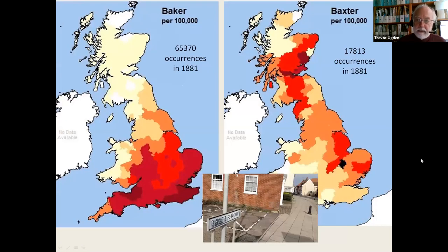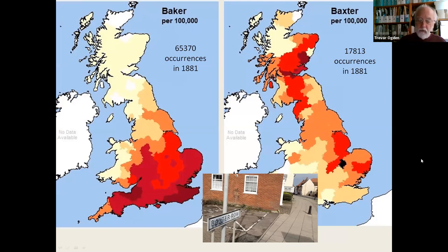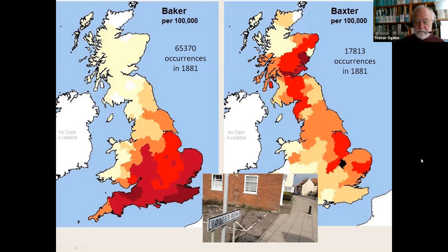Another regional variant of occupational names showing up in surname distributions is Baxter and Baker, which again meant the same thing. Baxter is pretty strong in Scotland but not exclusively. When I first saw Baxter Row here, I wondered whether it might have been an occupational indication, but that's pretty clearly wrong from the surname distributions — Baxter was never much used around here. In any case, I see in the Puddy and Boston book that Baxter was a family here in the 15th century, so that seems to be the origin of the name here.